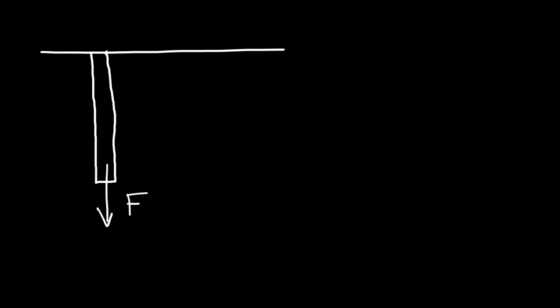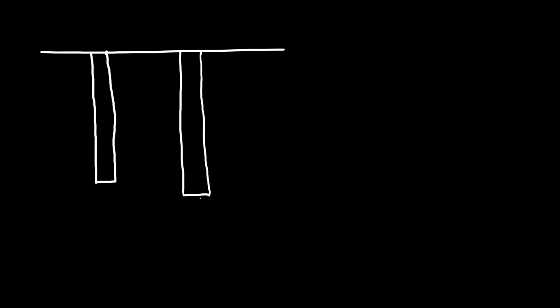Let's say if we have a solid — a rectangular solid. What's going to happen if we apply a downward force on it? What do you think is going to happen? Let's say if we hang a mass on it. All solids have the ability to stretch beyond their natural length, and the amount in which they stretch depends on the force that's applied. So here we have a mass hanging on it, and the downward force is equal to the weight force of that mass.